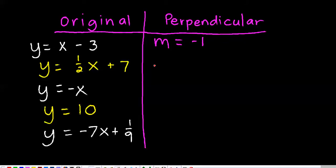That's because 1 is really 1 over 1 and the opposite of that is negative 1 over 1. Next one is 1 half, it's a slope here, and the opposite reciprocal of that, of course, is negative 2. I know you know that one.